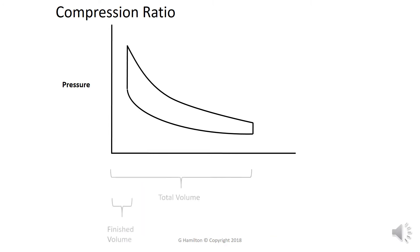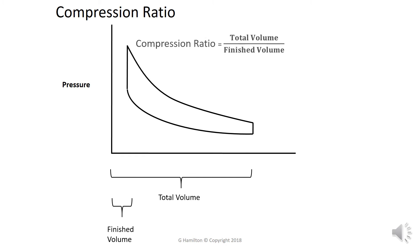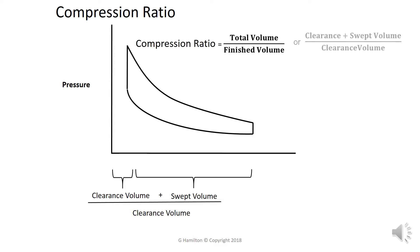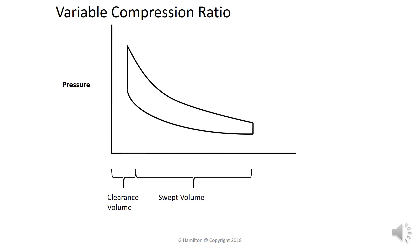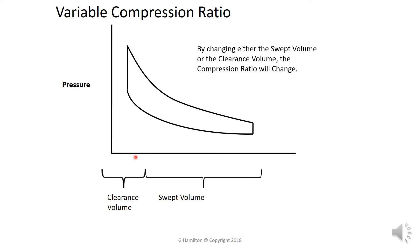Compression ratio is the ratio between the total volume and the clearance volume - that's the clearance volume plus the swept volume divided by the clearance volume. On my engine, I am changing the clearance volume and keeping the swept volume the same. So the clearance volume changes and the swept volume goes up and down.